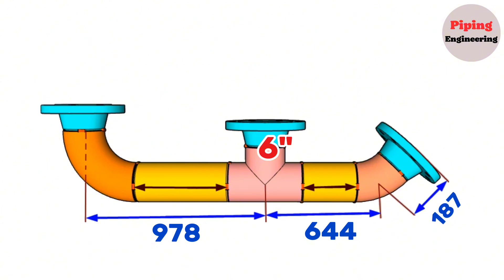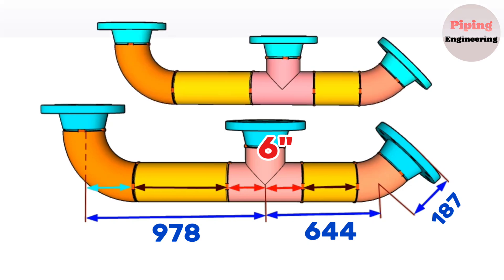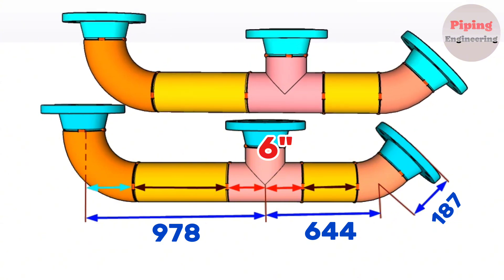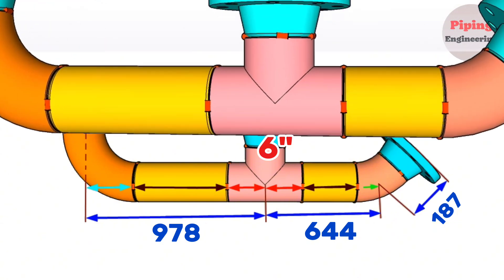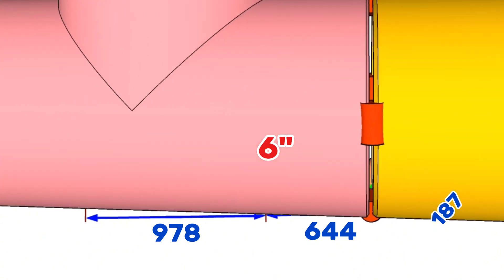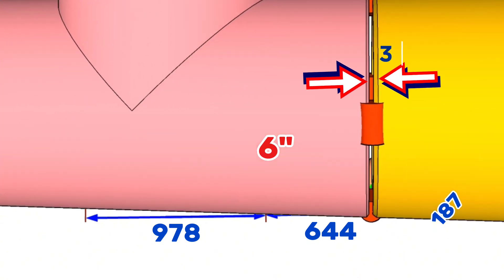If we know the equal T center to N dimension, we can easily calculate and find the other dimensions ourselves. Also, you can see that all the pipe fittings in this pipeline are fit up together with a 3-millimeter welding gap.